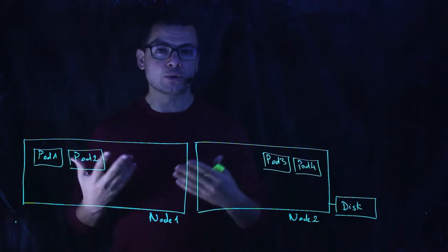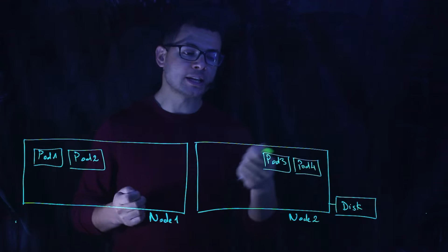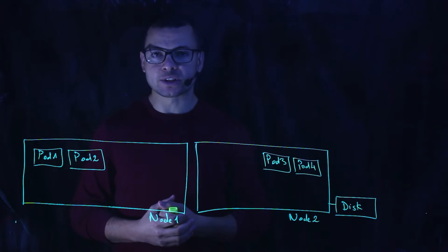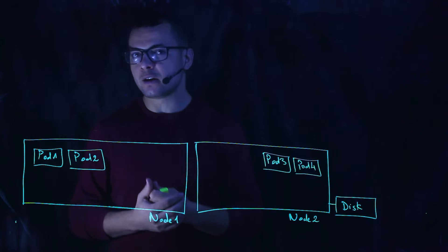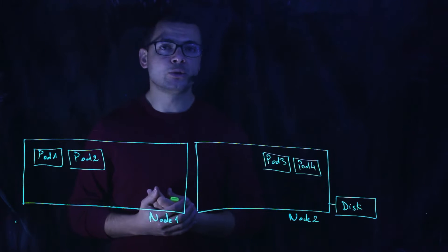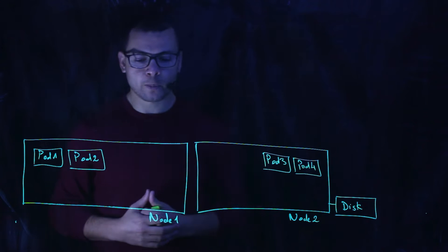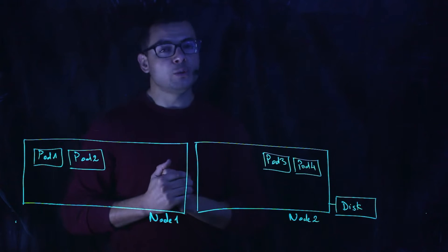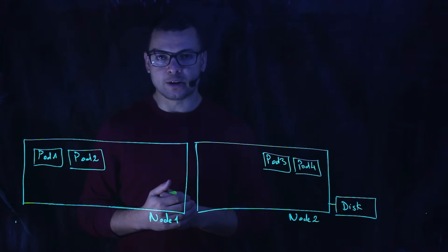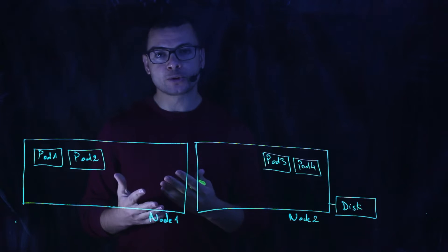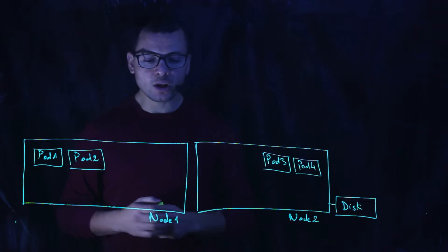We need monitoring to understand, for example, if we need to scale out the cluster by adding nodes or scale out pods, and to monitor how the application is behaving to make sure we don't have failures related to CPU, memory, and network. For that, we need monitoring tools. There are lots of tools available today. One of them is Prometheus, which is supported by the CNCF foundation.